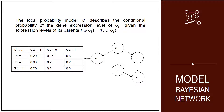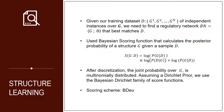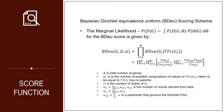The local probability model will denote how the parent gene's expression level affects the expression level of the child gene. To learn the structure, we used a Bayesian scoring scheme. Since the joint probability on the structure is multinomial, we assumed a Dirichlet prior, and the scoring scheme is the Bayesian Dirichlet equivalence uniform scoring scheme.